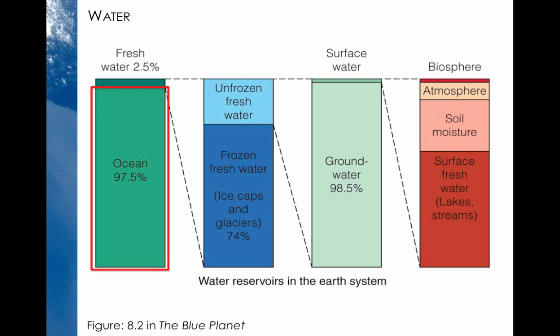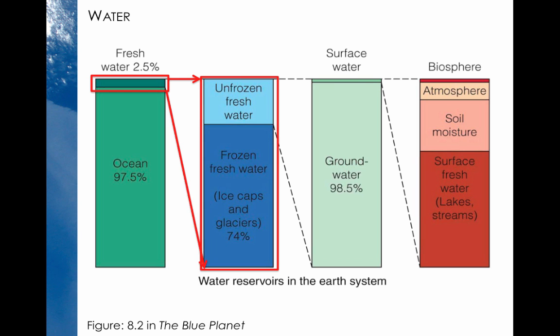When we say that the ocean is salty, we mean that there are many dissolved elements present in the water, and we will discuss these in the ocean section. Humans can't consume water with large amounts of dissolved salt, and this will also kill plants. So we need fresh water with low quantities of salt, and the second part of the graph zooms in on the remaining 2.5% of water on Earth, which is all fresh water.